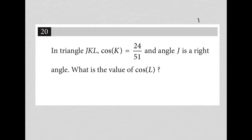So I'm going to use the strategy plug-in picture. I'm not going to just visualize this right triangle, I'm going to actually draw it. I'm told that the right angle is J. I'm told that it's triangle JKL, so I'm going to put a K and an L here. I'm also told that the cosine of K is 24 over 51.